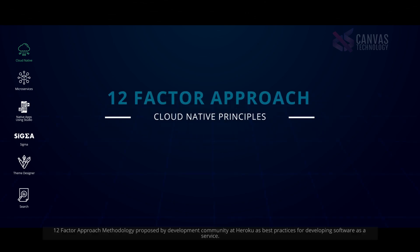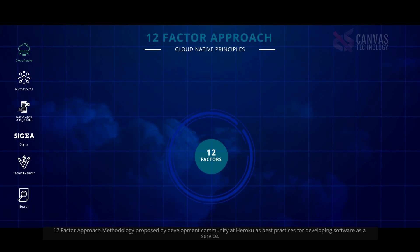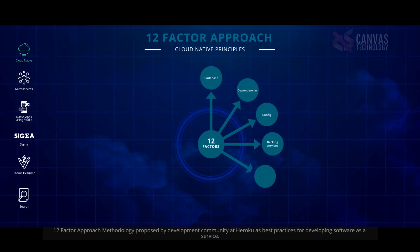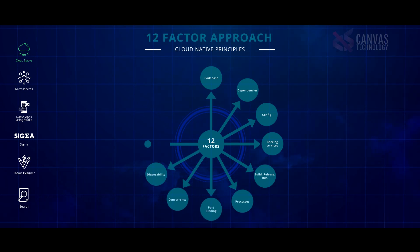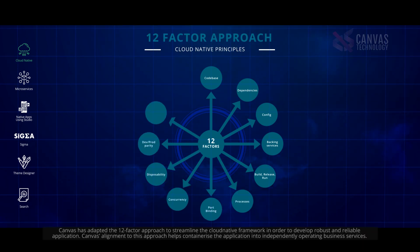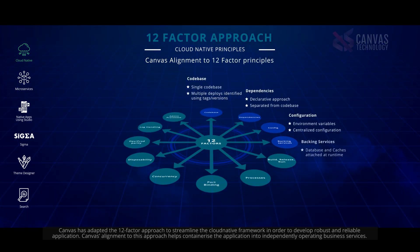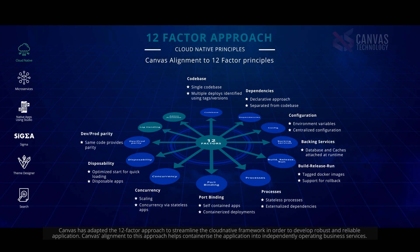Canvas has adopted the 12-factor approach methodology — proposed by the development community at Heroku as best practices for developing software as a service — to streamline its cloud-native framework and develop robust and reliable applications. This alignment helps containerize the application into independently operating business services.